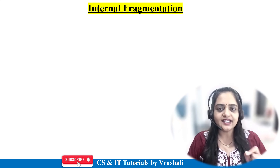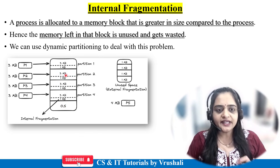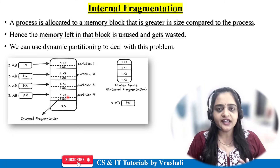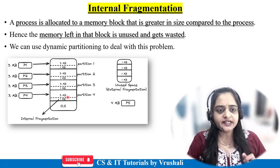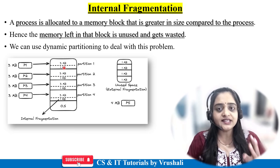Let's understand what exactly internal fragmentation is. Here in this diagram, memory is divided into equal partitions — 4MB, 4MB, 4MB, and 4MB. The complete memory is divided into equal fixed size partitions. Now suppose process 1 is coming and requires 3MB memory for execution. From the 4MB partition, they use only 3MB, so 1MB is remaining.